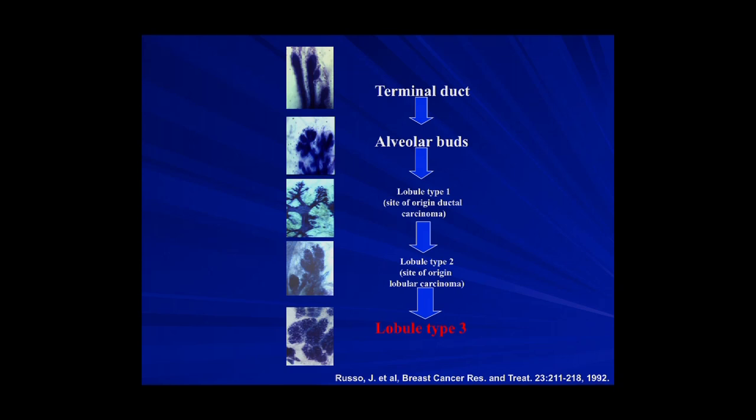From lobular type 1, when the woman starts getting her menstrual cycle, she develops lobular type 2. When the woman gets pregnant, she develops lobular type 3. There is a very clear morphological difference between the terminal ductal structure of lobular type 1 compared to lobular type 2 and 3. Lobular type 3 is a more differentiated structure that acquires even greater differentiation during lactation, which we call lobular type 4.